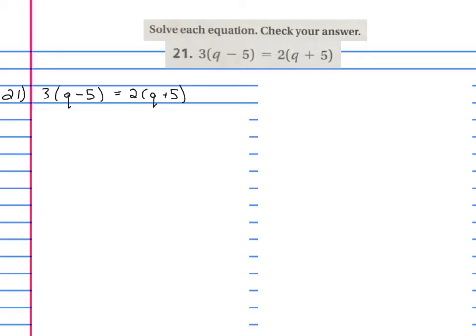Alright, solve each equation and check your answer. In this case we've got to use the distributive property. Three parentheses q minus five close parentheses equals two parentheses q plus five close parentheses. So how do I do it?